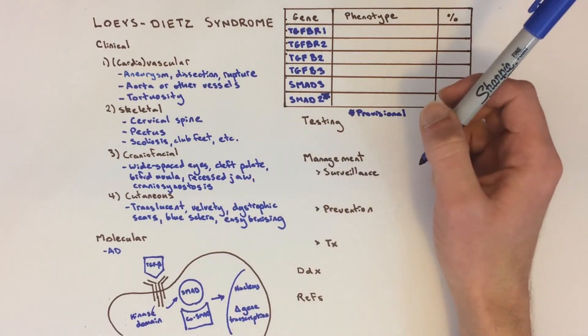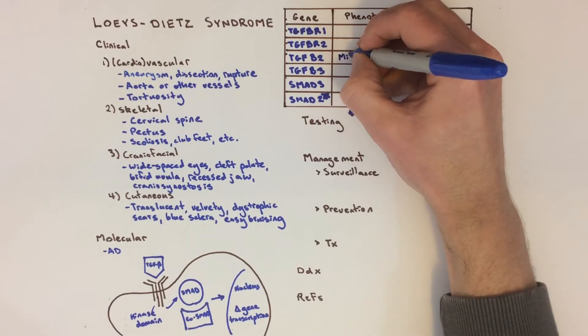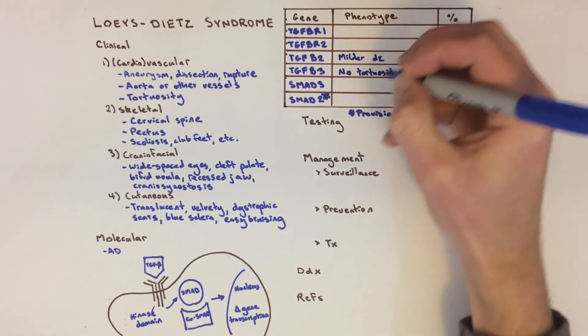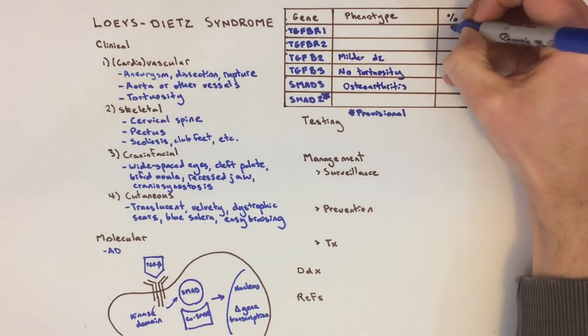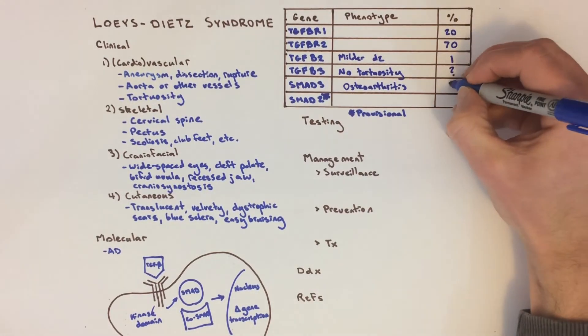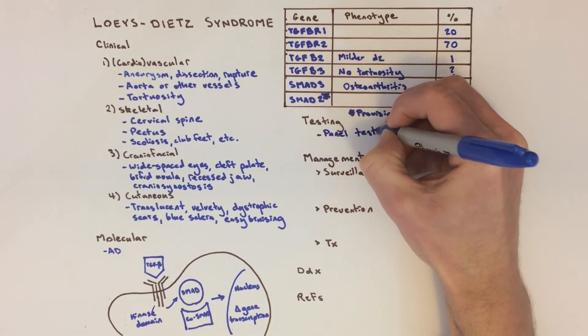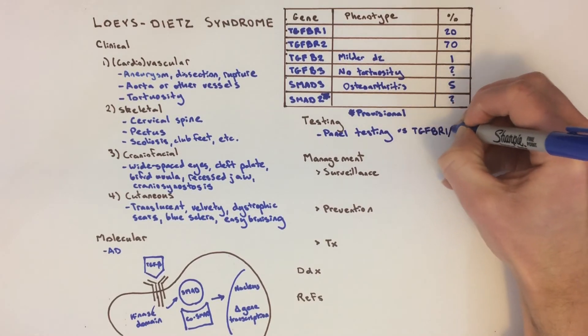Despite some gene-phenotype associations, like early osteoarthritis in SMAD3 disease and a milder phenotype in TGF-beta 2 disease, it's difficult to guess which gene is involved just from the phenotype. Thus, it's reasonable to use a gene panel that tests for all of the genes in order to make the diagnosis. Alternatively, testing TGF-beta receptor 2 and 1 could be done first, since these are the most frequently mutated genes.